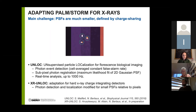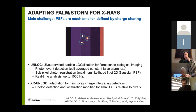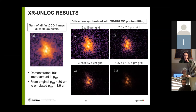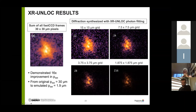Dimitri noted that no real-space reconstruction was shown from the simulation or real data. Stefan explained they only measured a single 2D slice and didn't do a rocking curve during this experiment — it was an exploratory first attempt. Dimitri suggested that simulating the whole rocking-curve process could reveal systematic artifacts. Stefan agreed that was a worthwhile suggestion.